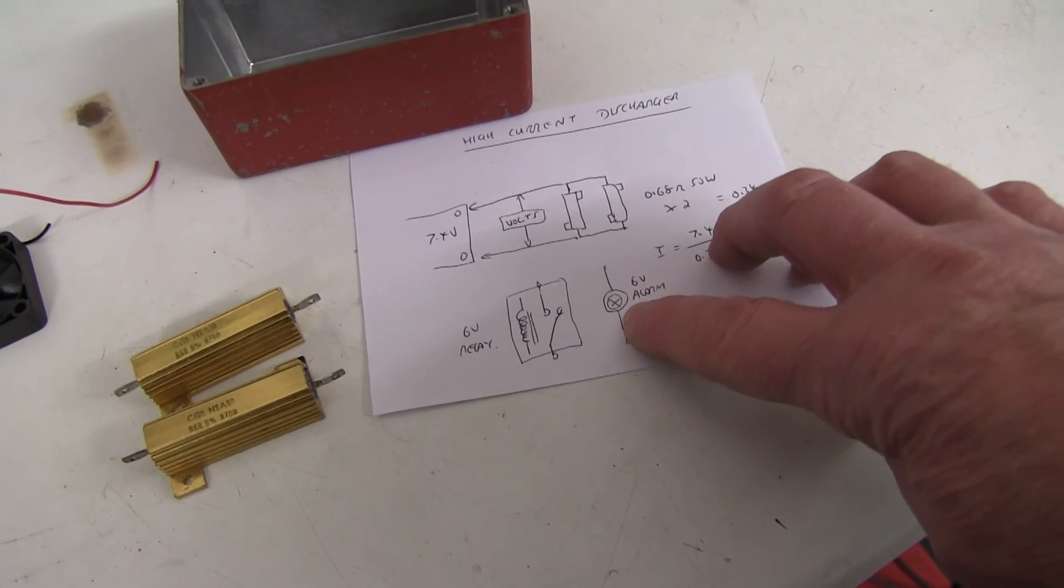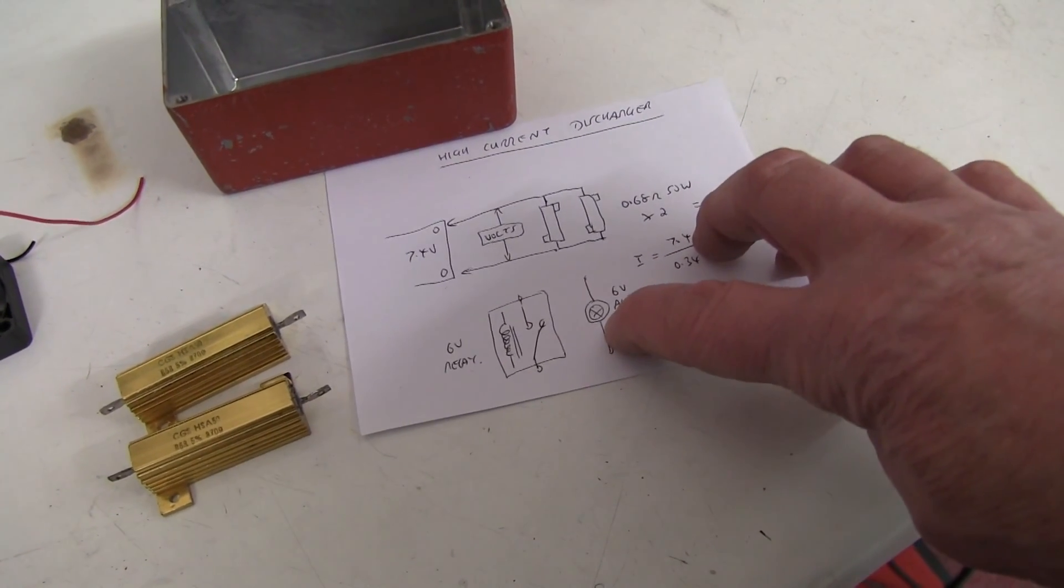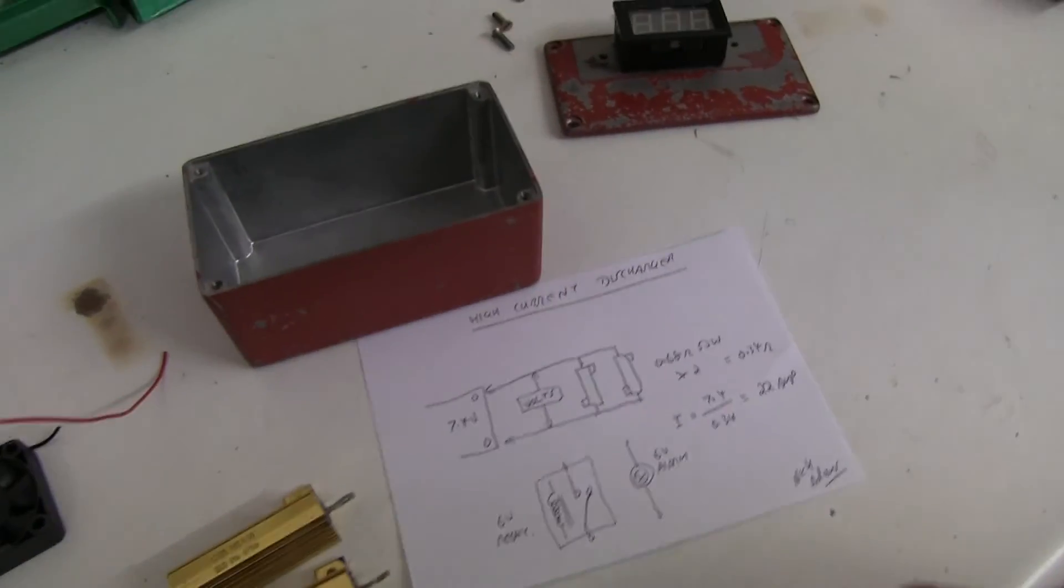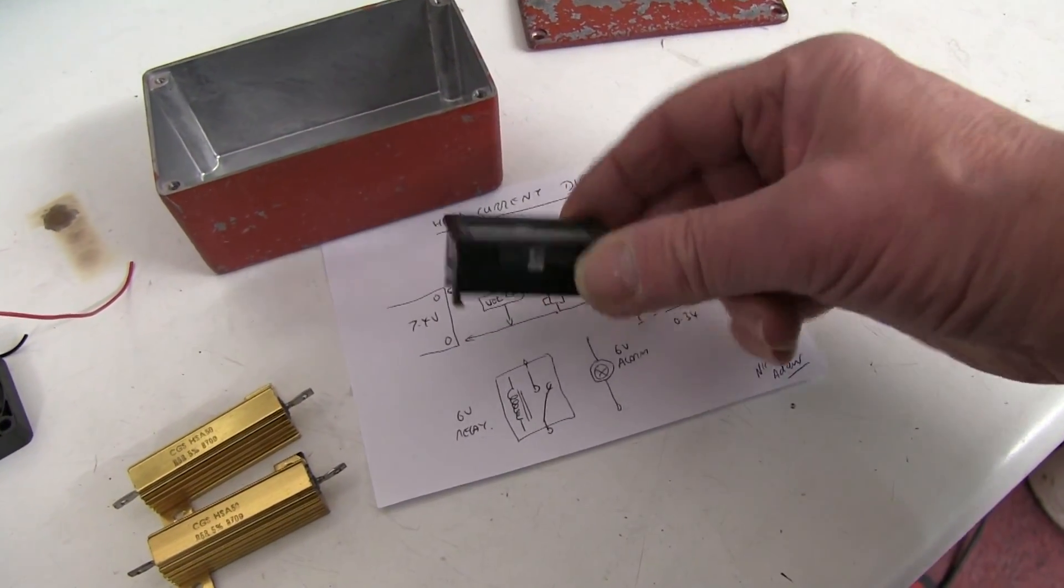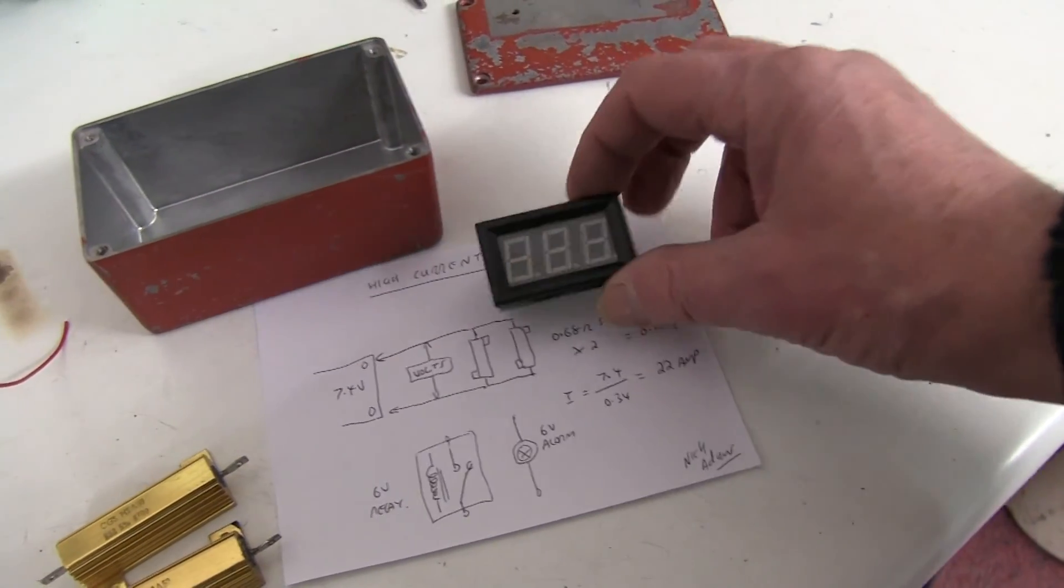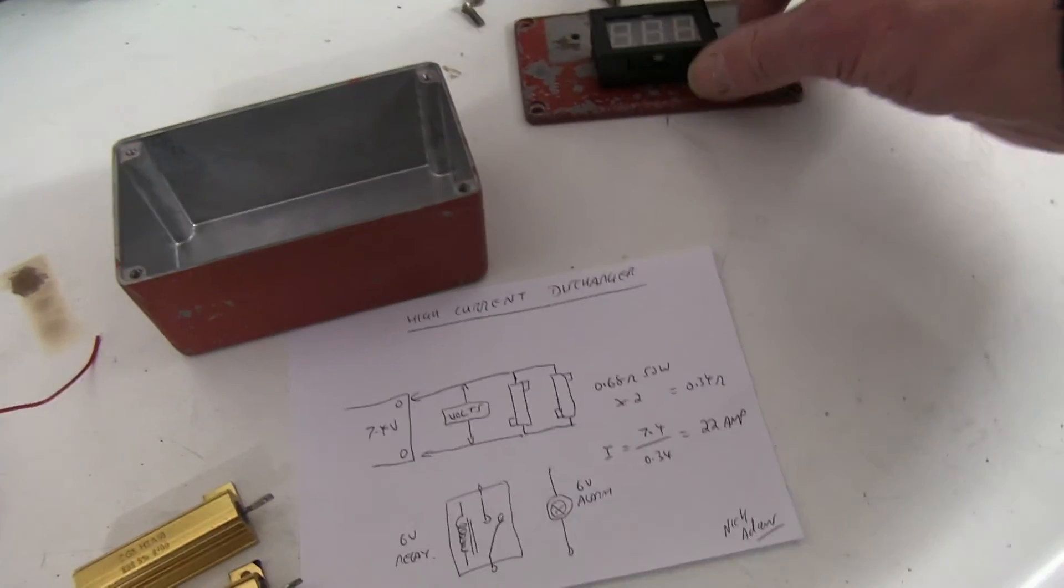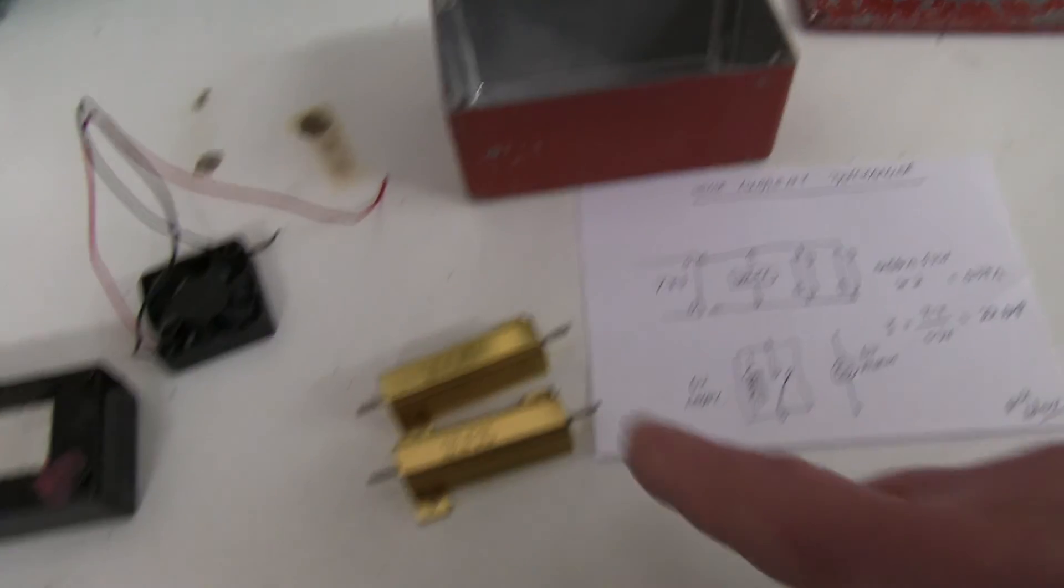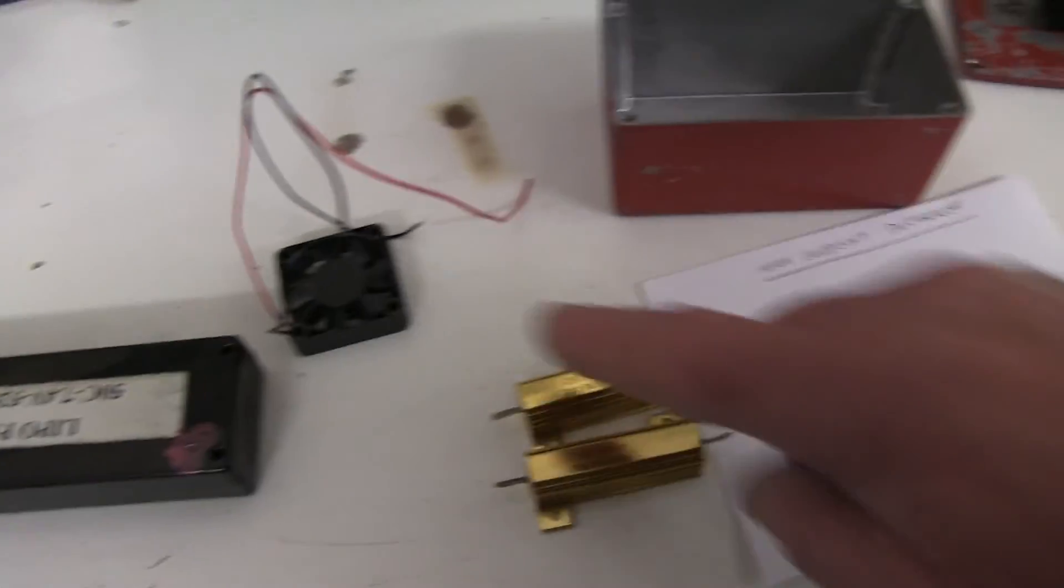Also you can put a buzzer alarm, you can buy them very cheap on eBay and set it to 6 volts so it buzzes away. Anyway I'm going to put a voltmeter. You can buy voltmeters very cheap on eBay with a nice big display. Make sure it reads 7 point whatever, not just go to only 4 volts, some of them do. I can stick that on the top.